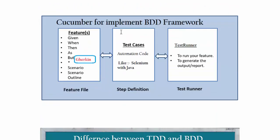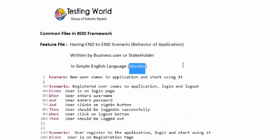To summarize: we have a feature file where test cases are written in Gherkin using keywords like Given, When, and Then. We have actual automation code in the step definition file, where we can use Selenium or any other API with a programming language — we are using Selenium with Java. Then we have a test runner that executes the test cases and generates a report. In the next session I'll help you write a feature file using Gherkin language. That's all for this session, thanks for watching.